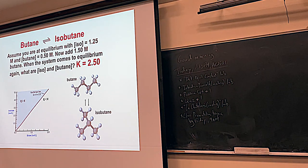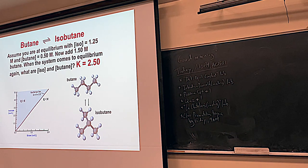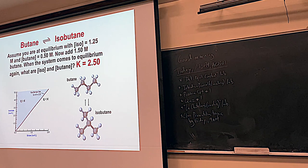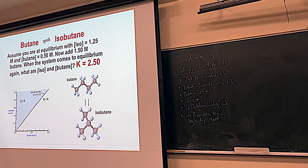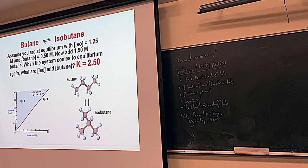Another thing we talked about starting on Friday was Le Chatelier's principle, which is a way to understand shifts to the equilibrium. We talked about one way to use Q, the reaction quotient, to see if your reaction is at equilibrium. Q looks the same as K — products over reactants. Here we've got an equilibrium between isobutane and butane: 1.25 divided by 0.5 gives K equals 2.5, so this system is at equilibrium. But we are disturbing it by adding 1.50 moles per liter more butane.